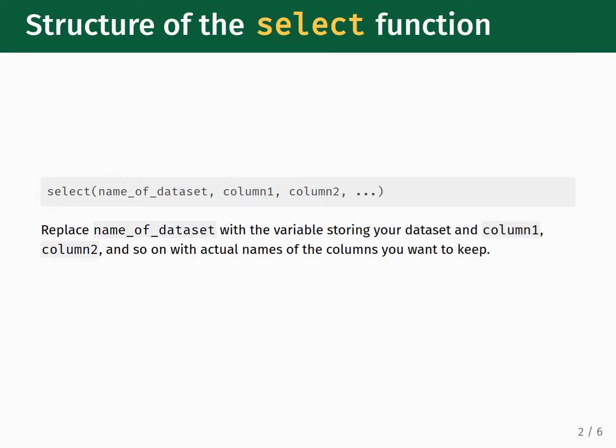In the lesson on the select function, we learned that we run the function by putting the data frame's name as the first input, followed by the names of the columns we wish to select as the subsequent inputs. This format is fine to use when we are only applying one transformation.